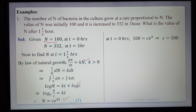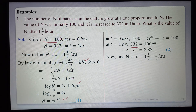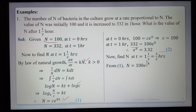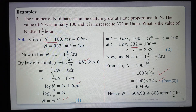Substituting given data: at t = 0, N = 100 gives 100 = C·e^0, so C = 100. At t = 1, N = 332 gives 332 = 100·e^K, so e^K = 3.32. To find N at t = 1.5 hours: N = 100·e^(1.5K) = 100·(e^K)^(1.5) = 100·(3.32)^1.5 ≈ 604.93 ≈ 605. So the number of bacteria after 1.5 hours is 605.